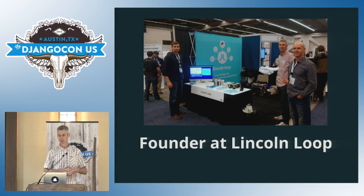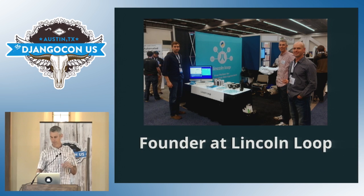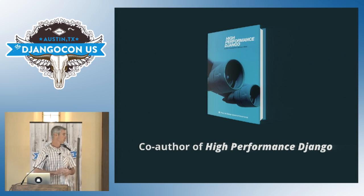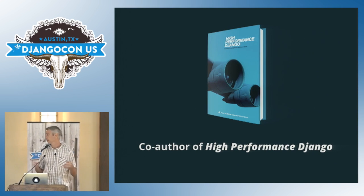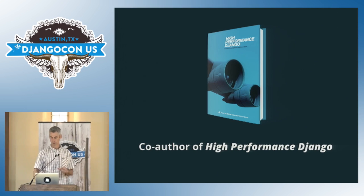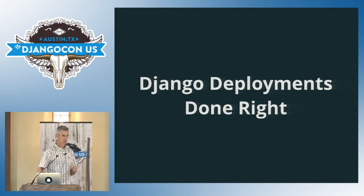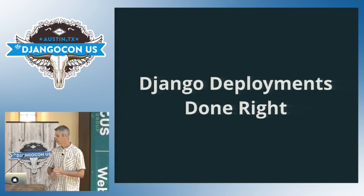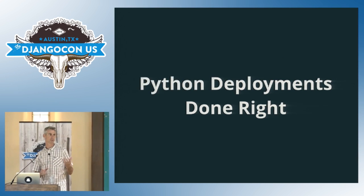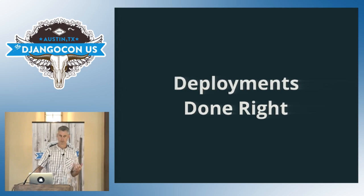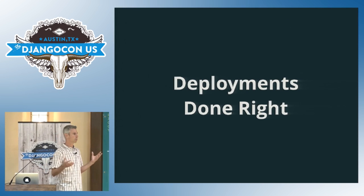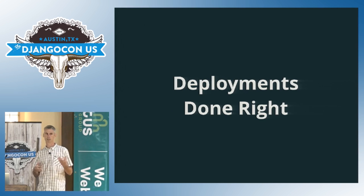Today we'll talk about deployment, which is a topic I'm kind of interested in at the moment. I'm also the co-author of this book, High Performance Django, and it's all about how to build Django sites that scale and are fast. You can get a copy at highperformancedjango.com, and there's little coupons in your swag bag as well. So today's talk is Django Deployments Done Right. But really, I probably could have called it Python Deployments Done Right. There's not a whole lot of Django-specific stuff in here, and honestly, deployments done right would have fit most of it as well. Deployments for web applications all look kind of similar.